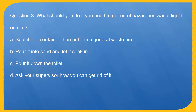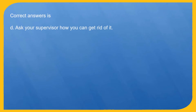Question 3. What should you do if you need to get rid of hazardous waste liquid on site? A. Seal it in a container then put it in a general waste bin. B. Pour it into sand and let it soak in. C. Pour it down the toilet. D. Ask your supervisor how you can get rid of it. Correct answer is D. Ask your supervisor how you can get rid of it.